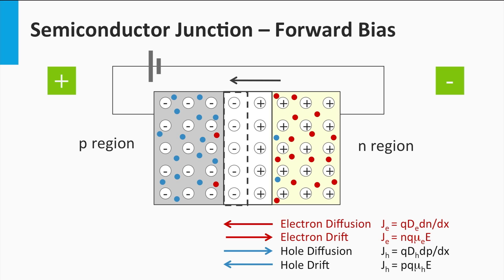First, we consider a p-n junction in the dark and we apply a forward bias on the device. This means we have a more positive voltage at the p-region side than at the n-region side. The depletion zone is the area where the built-in electric field is present. It is also the zone with the highest resistivity, and the applied external bias will create an additional electric field at the depletion zone, indicated by the green arrow, which is opposite to the built-in electric field indicated by the black arrow. The effective electric field across the depletion zone is the sum of the built-in field and the applied electric field, and becomes smaller as a result of the forward bias.